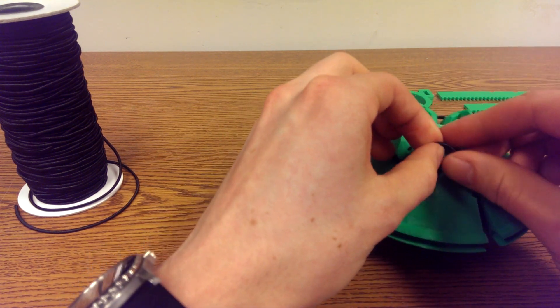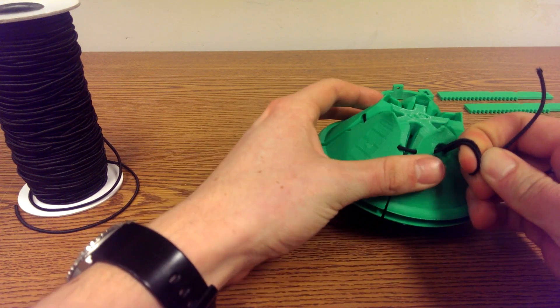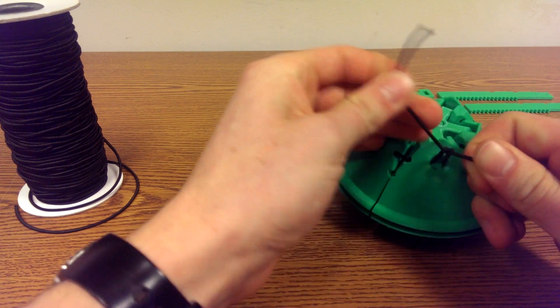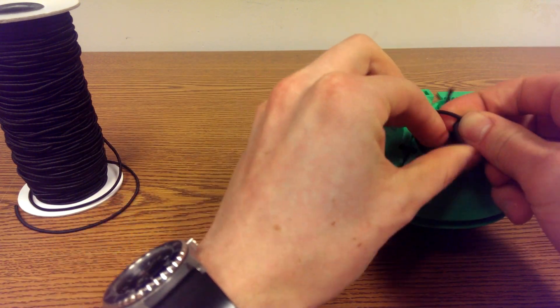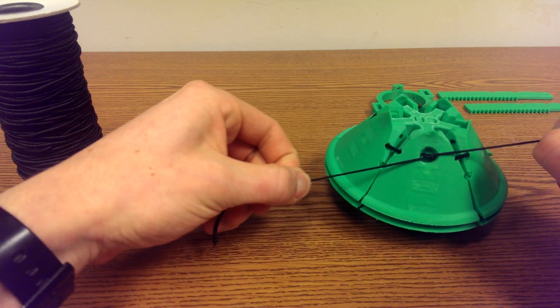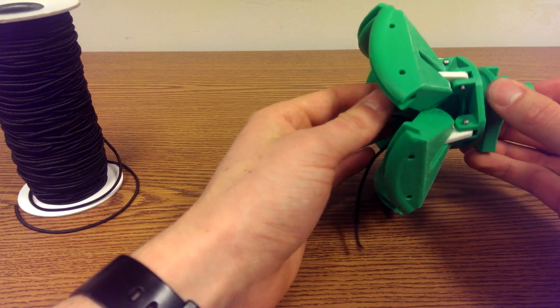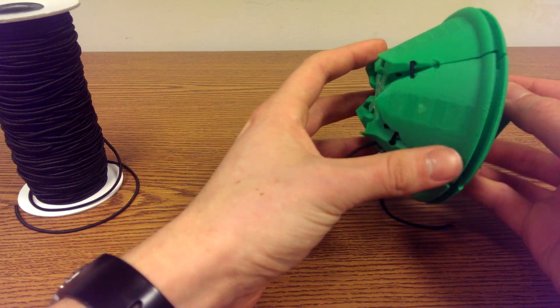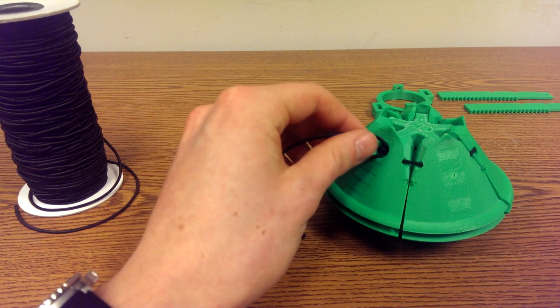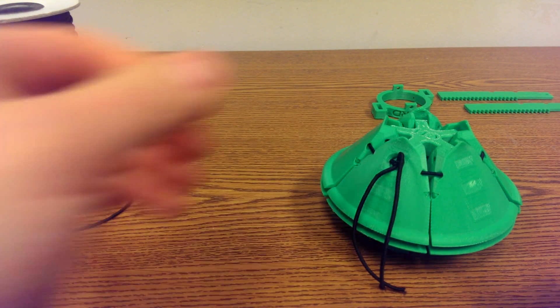And then go ahead and stretch the elastic fairly tight and then just make a knot. And the elastic should be tight enough that it readily pulls each of the pedals into the closed or open position. You can just test that and this tightness looks pretty good. So I'll just go ahead and trim off the excess then.